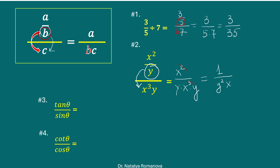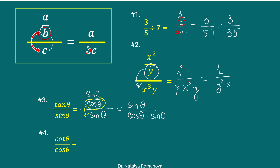This trick we can use for all trig functions. For example, tangent divided by sine. Tangent is sine theta divided by cosine theta, and we are dividing by sine theta. Cosine theta goes to the sine in the denominator. We have sine theta divided by cosine theta multiplied by sine theta. We can cancel out sine theta. Finally, we have 1 divided by cosine theta.